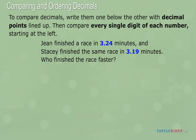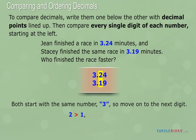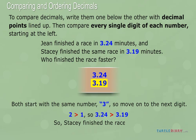Line up the numbers you need to compare. Start on the left. Both start with the same number, 3, so move on to the next digit. The next digits are 2 and 1. 2 is bigger than 1, so 3.24 is bigger than 3.19. So Stacey finished the race faster.